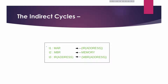Once an instruction is fetched, the next step is to fetch the source operand. The source operand is fetched by indirect addressing. Register-based operations may not need to be fetched. Once the opcode is executed, a similar process may be needed to store the result in main memory. In step one, the address field of the instruction is transferred to the MAR. In step two, the address field of the IR is updated from the MBR so that it now contains a direct address rather than an indirect address.